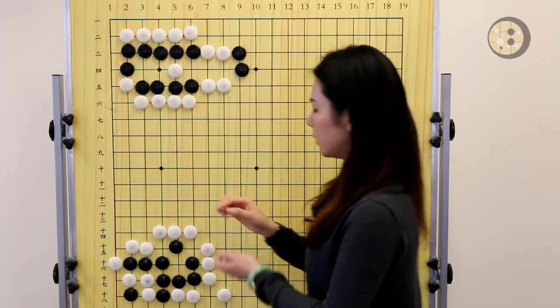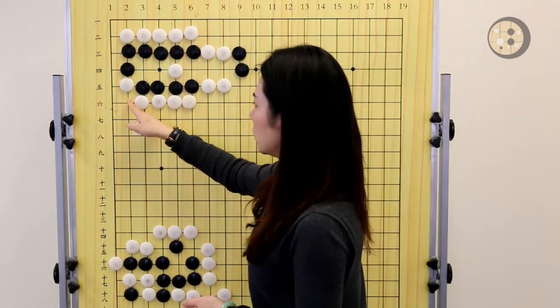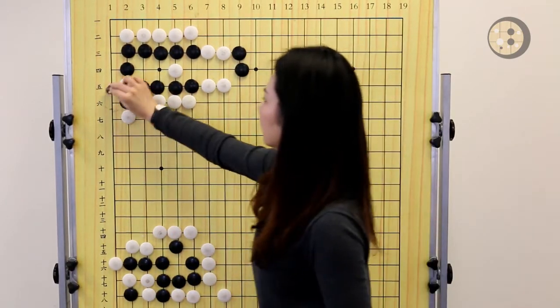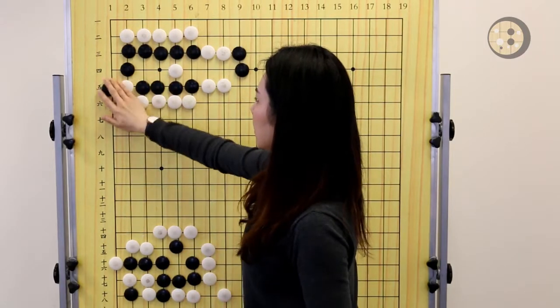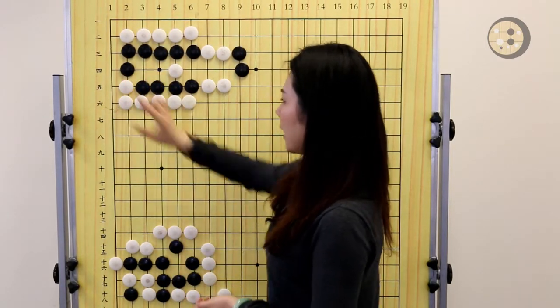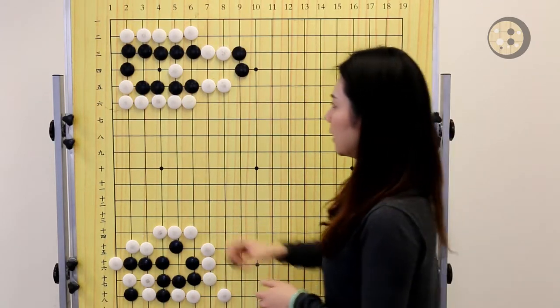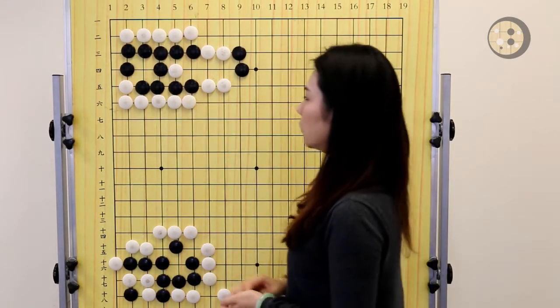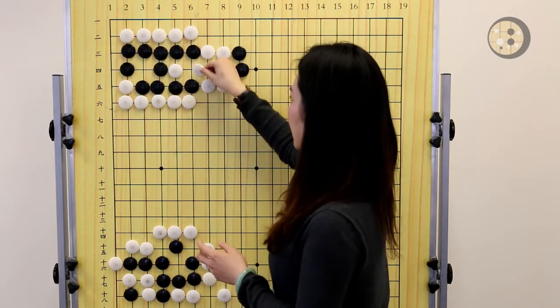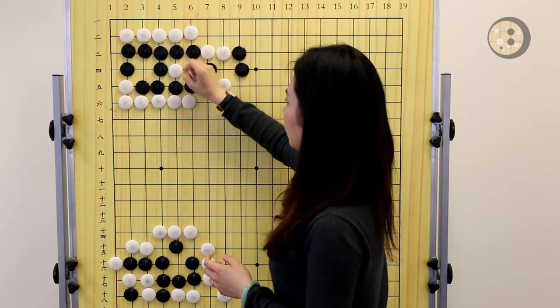So if Black plays here, Black is going to capture this stone next. That means White now needs to connect this stone. So after that exchange, Black gets a Sente. So now when Black comes back to make this eye, Black will have one eye on the left and one eye on the right.